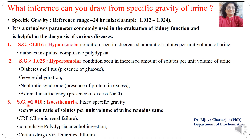When specific gravity remains constant at 1.010, this is known as isosthenuria — meaning the specific gravity is fixed. This is seen when the ratio of solutes per unit volume of urine remains the same as that of solvent, and such a condition is seen in diseases like chronic renal failure, alcohol ingestion, and certain drugs such as diuretics and lithium.